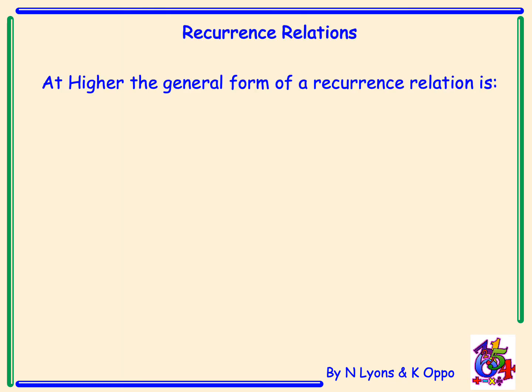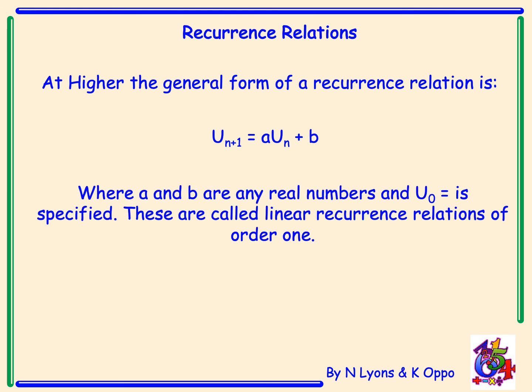At Higher, the general form of a recurrence relation is u_{n+1} equals a·u_n plus b. Here, a is always where your percentage would be. a and b are any real numbers and u_0 is specified. These are called linear recurrence relations of order one.